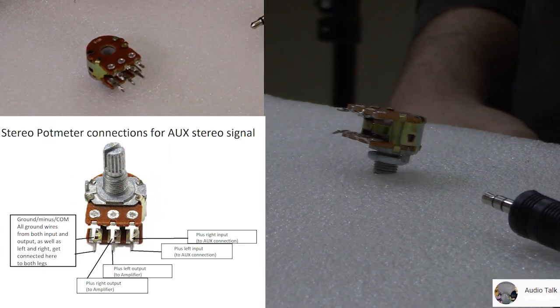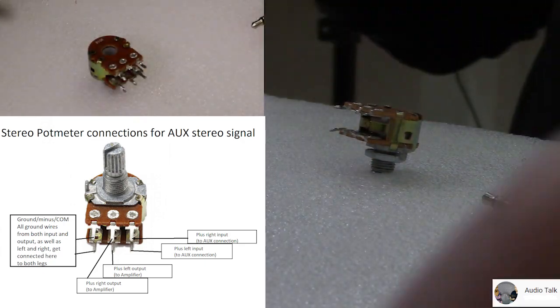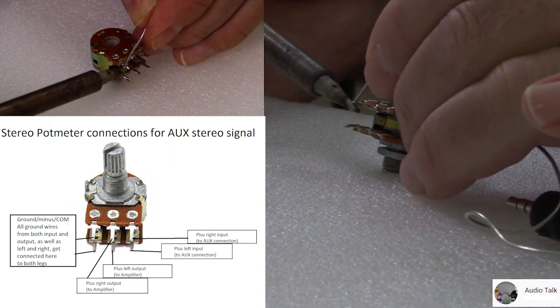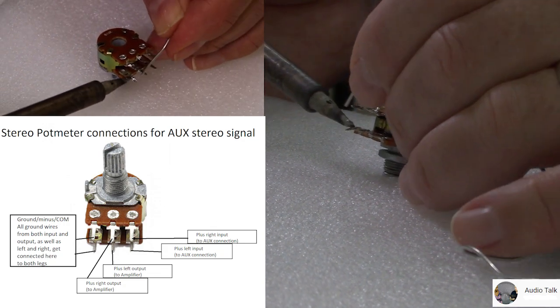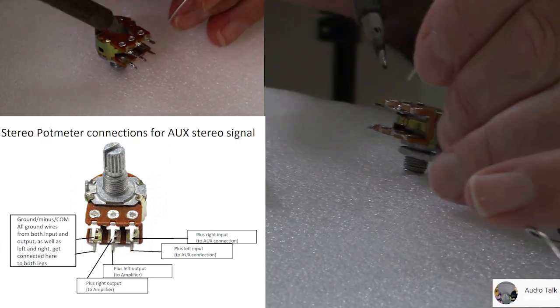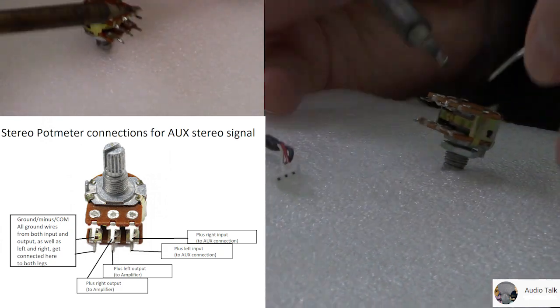The first thing I do is put some solder on every leg just to make it easy to make the final connections. I'll do the same to the wires as well. We'll look at that in a moment. So everything gets some solder there.